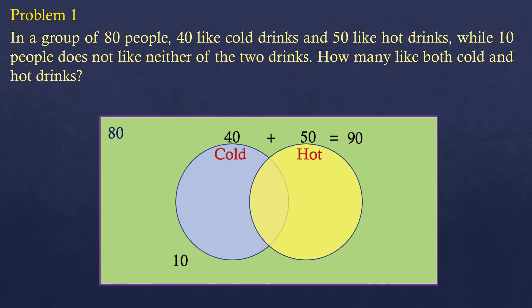But if you look at the numbers, 40 plus 50 is 90. How can it be more than 70? It's because there are people who like both cold and hot, so they are counted twice in the 40 and 50. So 90 must come down to 70, meaning there are 20 who like both cold and hot. That's how you find the value in the middle of the two circles.